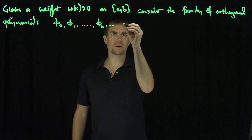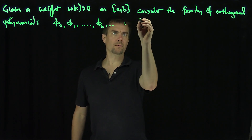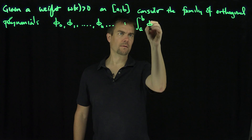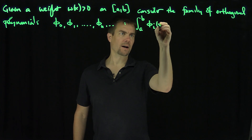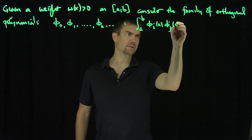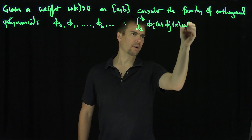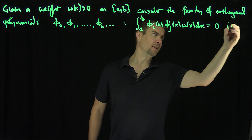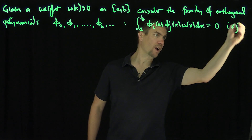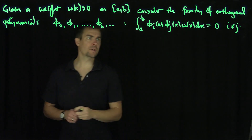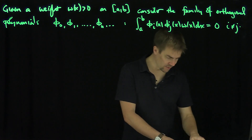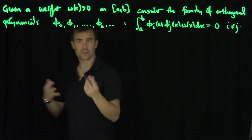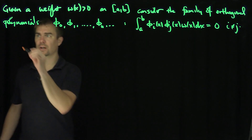What this means, i.e., we know from previous videos, is that the integral from a to b of φᵢ(x) φⱼ(x) w(x) dx is equal to 0 if i is not equal to j. And of course you can easily construct these, and the degree of φᵢ is going to be equal to i.